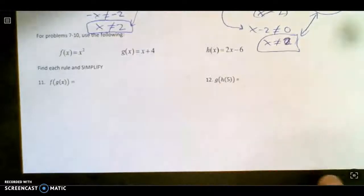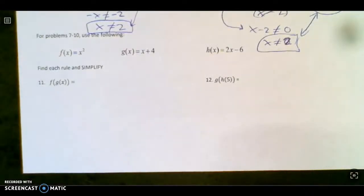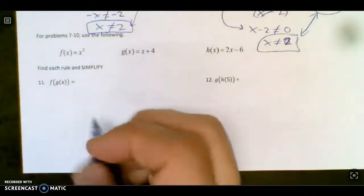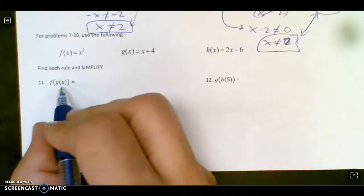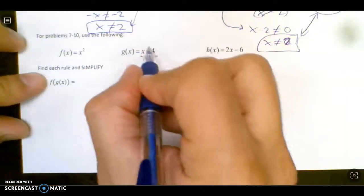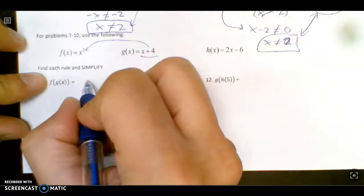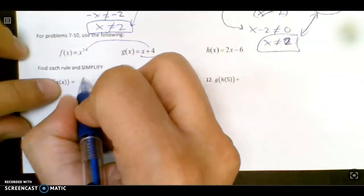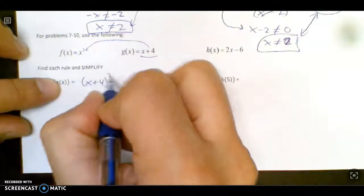So now coming down the home stretch here. Simplify using these rules. This is when you plug g of x into f of x. So we're going to go instead of x squared, it's going to be x plus 4 squared.